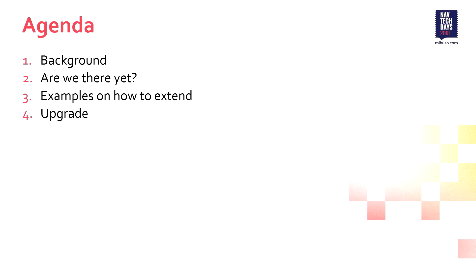So quickly, our agenda: we're going to talk a little bit about background, what we've been doing, how we've gotten to the point where we're at right now with Business Central. Then we'll talk about the current state, give some examples on how to extend, and finally talk about some upgrade considerations when dealing with extensions.